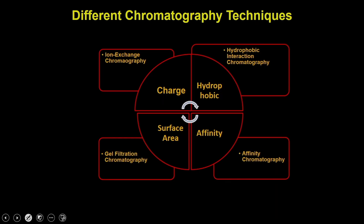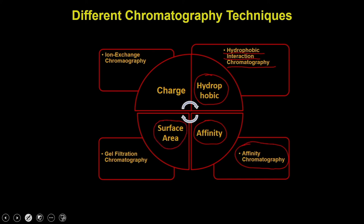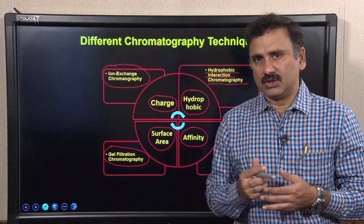The hydrophobic core can be exploited in hydrophobic interaction chromatography. The affinity regions on proteins can be exploited in affinity chromatography. The surface area as a property can be exploited in gel filtration chromatography. And lastly, the charges — positive or negative — present on the protein can be exploited in ion exchange chromatography. Today we are going to discuss about ion exchange chromatography.